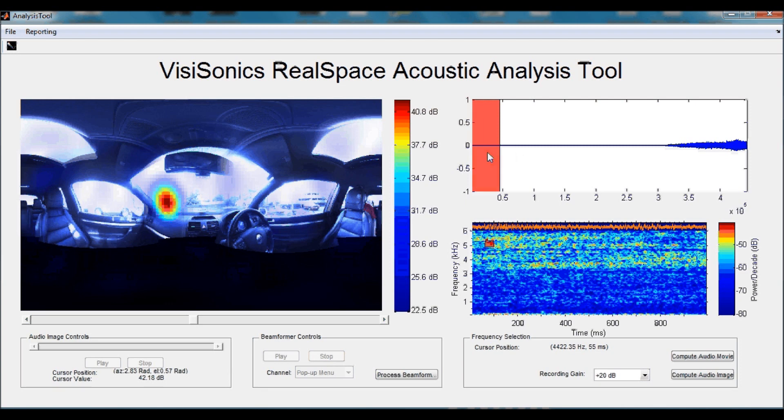If we look at the top right pane, we see a time domain signal of this white noise source as it was recorded by the audio camera. In the bottom right, we see a spectrogram of the one second selection window from the time domain. Here, we can select an arbitrary frequency and time window to compute an audio image on.